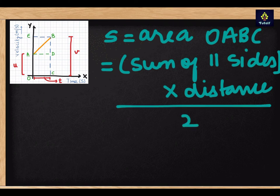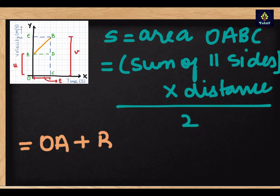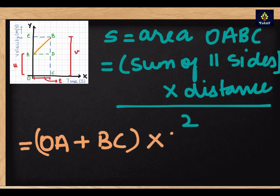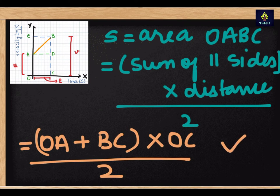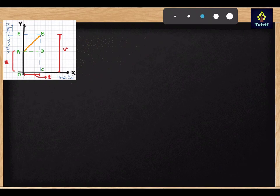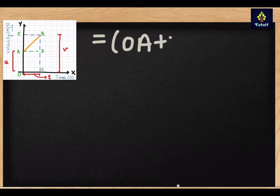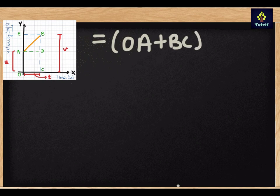So now here we can see that sum of parallel sides, that means OA and BC are the parallel sides, times the distance is the OC divided by two. This equation is important because this equation will give us the third equation of motion. Now what I have written I will write it again. So what I have written was OA plus BC times OC divided by two.